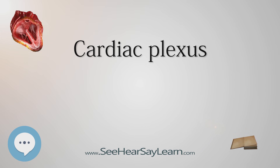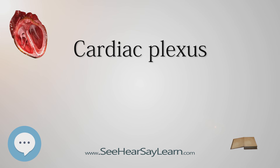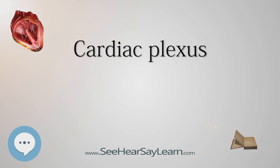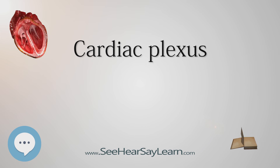The superficial part of the cardiac plexus gives branches: A. To the deep part of the plexus. B. To the anterior coronary plexus, and C. To the left anterior pulmonary plexus.